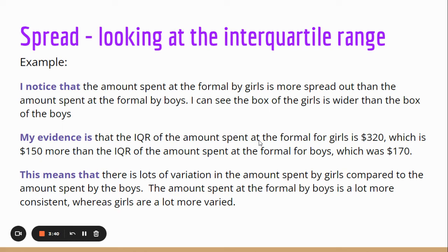My evidence for my box being wider is the interquartile range. The interquartile range of the amount spent for the formal for girls is $320 — upper quartile minus lower quartile — which is $150 more than the interquartile range spent by boys, which was $170. This tells me there is a lot more variation in the amount of money spent by girls compared to boys. The amount spent by boys is a lot more consistent.